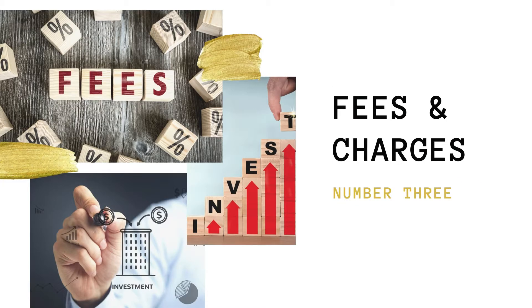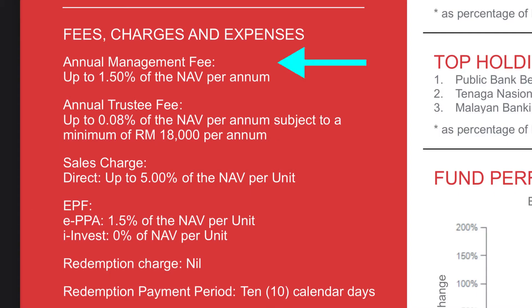Number 3: Fees and Charges. This is another part I would definitely take note of. Every fund will have this column. The common fees and charges include the annual management fees, trustee fees, sales charge, switching fees, and so on. Annual management and trustee fees generally range from 0.5% to 2%, and they are usually already deducted from the NAV, which is net asset value. So when we view the fund price, it is already after deducting these fees.